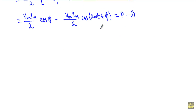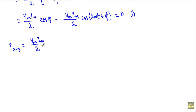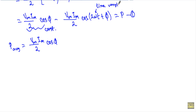Now if I want to calculate the average power absorbed by the RC circuit, I will take the average of the first term and the second term. The average value of the first term, Vm·Im/2·cos(phi), will simply be Vm·Im/2·cos(phi) itself, because this is a constant quantity. Now look at the second term — the 2ωt makes it a time-varying or alternating quantity.